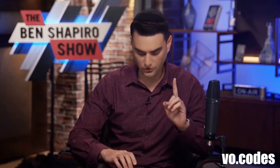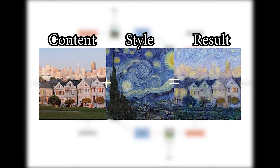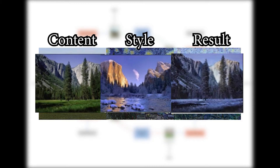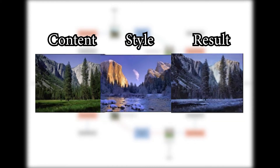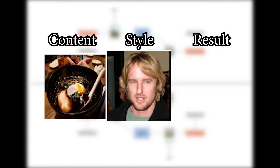Another thing GANs are good for is style transfer — the task of taking the style from one image and applying it to another. So things like horse to zebra, summer to winter, faces to... well, some results are stranger than others.